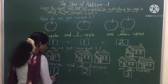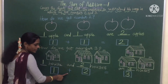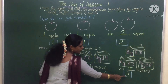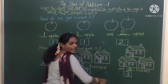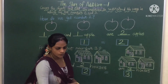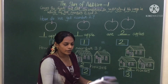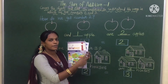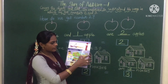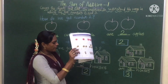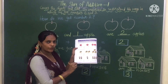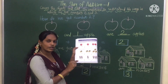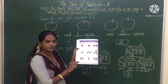So, one plus two is equal to three. In this way, you have to complete in page book number six, page number 42. Teacher has done it for you; the remaining one you have to complete.